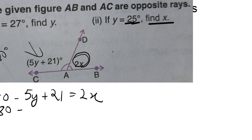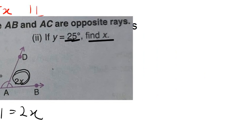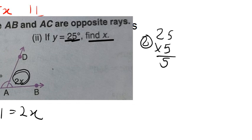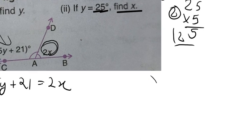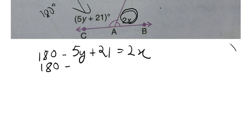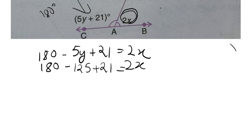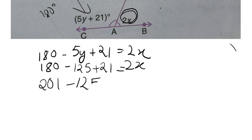So, 5y is 5 into 25, and that is 125. So, here we have 180 minus 125 plus 21 is equal to 2x. Now, according to the BODMAS rule, we will first add this thing, so what are we going to get?